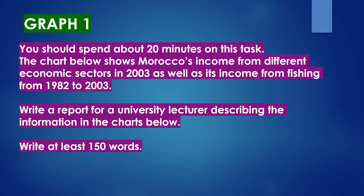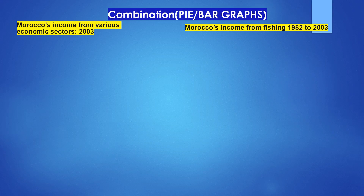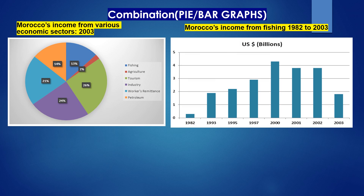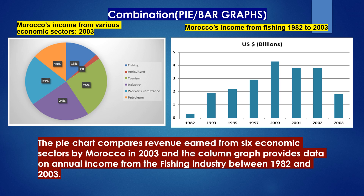Let's take a look at a recent exam question. You should spend about 20 minutes on this task. The chart below shows Morocco's income from different economic sectors in 2003, as well as its income from fishing from 1982 to 2003. Write a report for a university lecturer describing the information in the charts below. Write at least 150 words. Here we have a combination of a pie chart and a bar graph. The pie chart is for Morocco's income from various economic sectors in 2003, and the bar graph shows Morocco's income from fishing from 1982 to 2003.